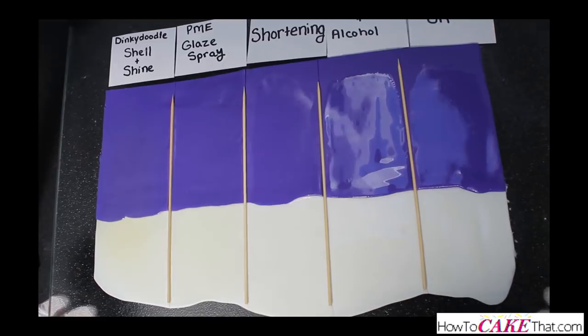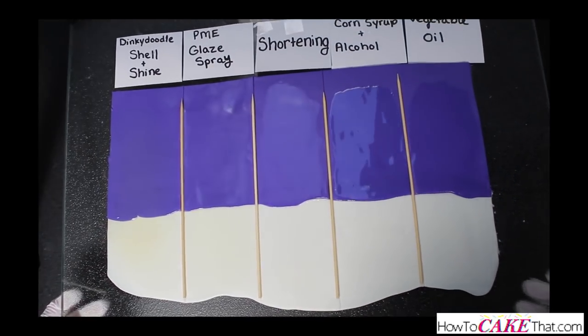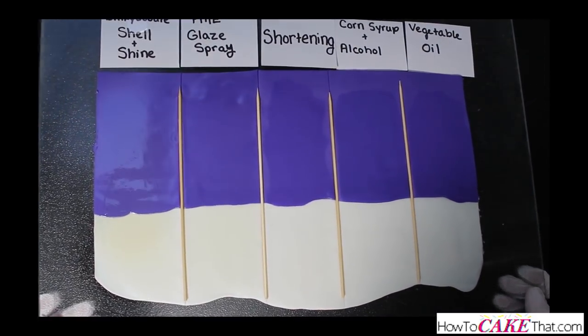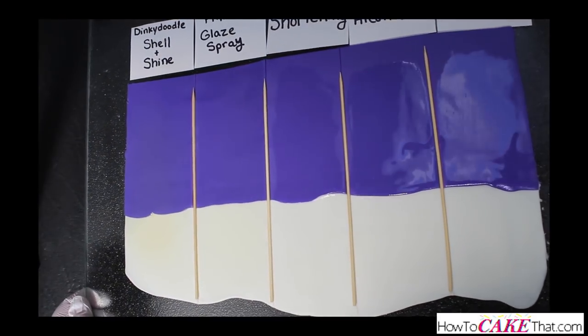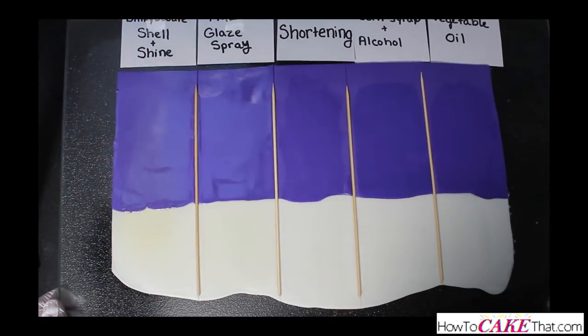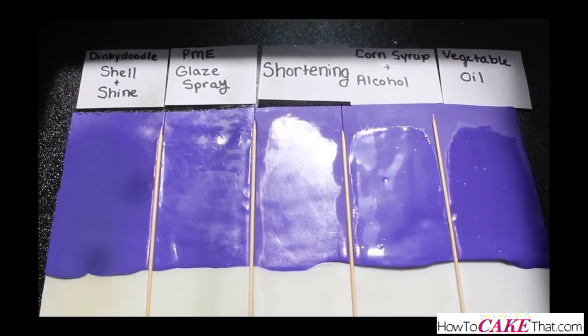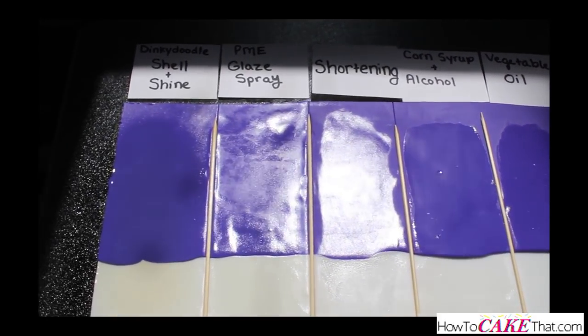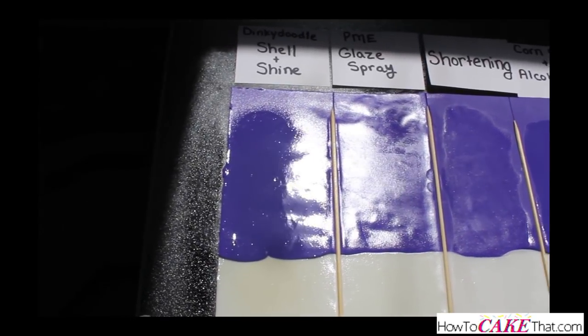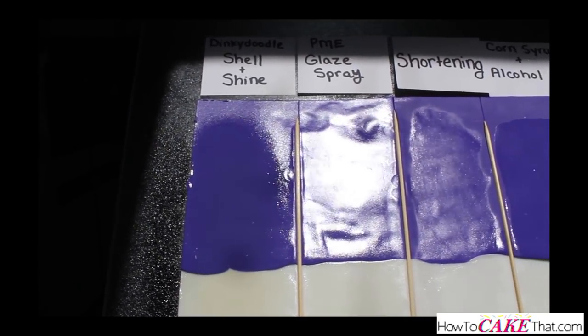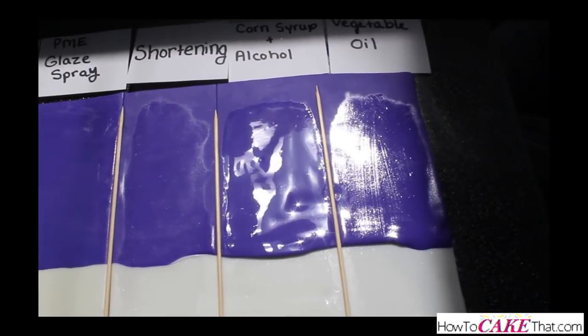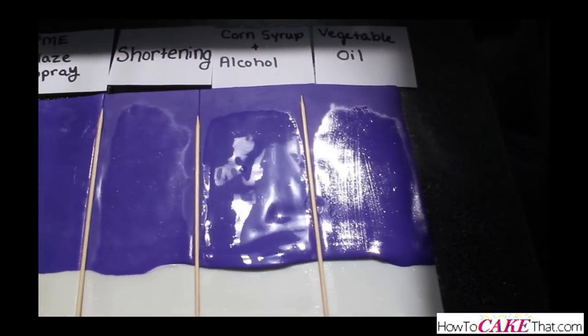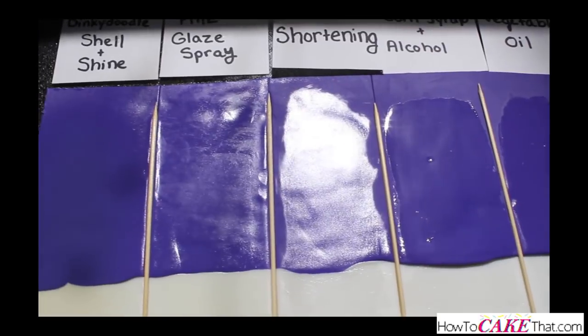The first thing I noticed about each of these products is that they all enhance the color of the purple fondant. The purple color is much more vibrant where it is glazed. Also, each one of these products gave the fondant a beautiful shine, but the level of shine varied from a soft satin finish to a high-gloss water-like shine. Look at the twinkle on that corn syrup and alcohol glaze, isn't it gorgeous?